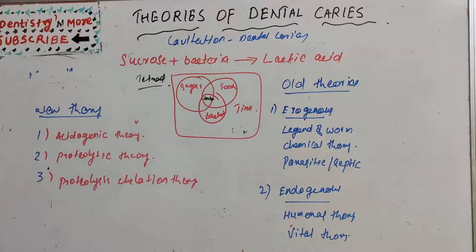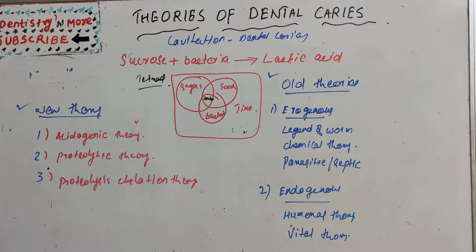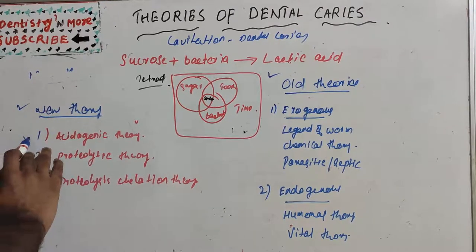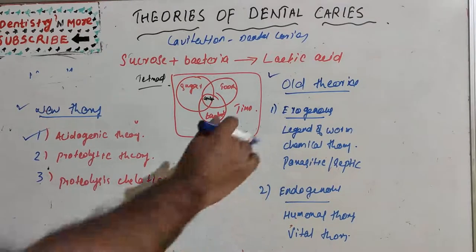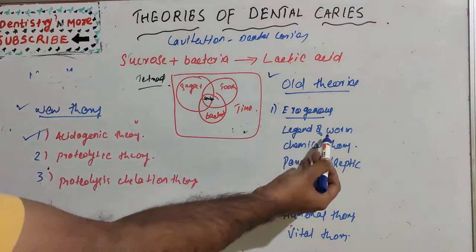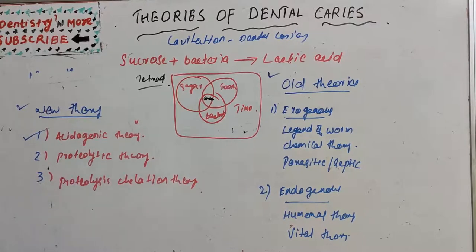Dental caries is considered a result of civilization. There were many theories trying to explain the concept behind it. We can classify all theories as old theories and new theories. The most accepted one is the acidogenic theory by Miller. All theories can be grouped as exogenous theories — worm theory, chemical theory, and parasitic or septic theory — and endogenous theories — humoral theory and vital theory. The new theories are the acidogenic theory, proteolytic theory, and proteolysis chelation theory.